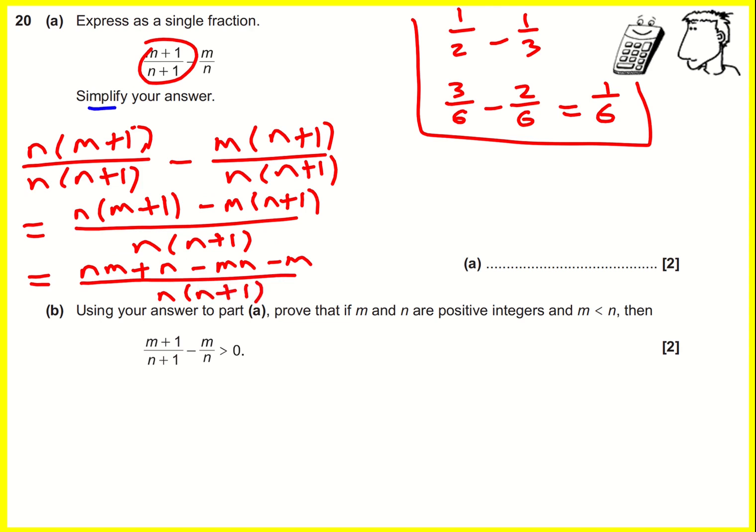We're nearly there, we're trying to simplify it. And actually, nm is exactly the same as mn. So because there's a minus here, these are going to cancel. My final answer is n minus m over n times n plus 1. That is a simplified fraction.